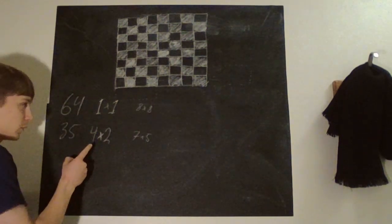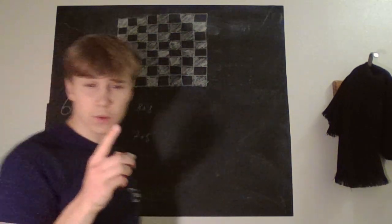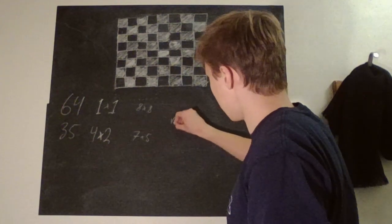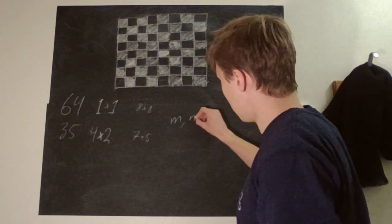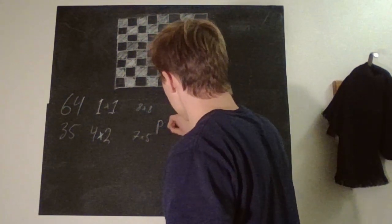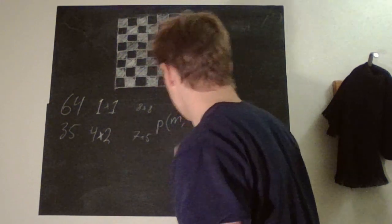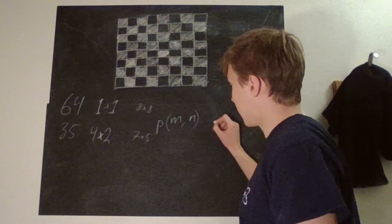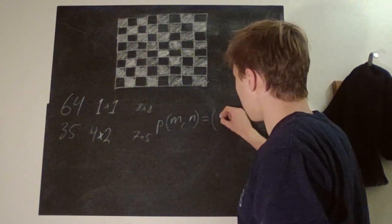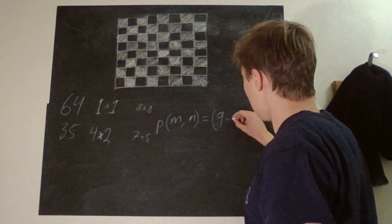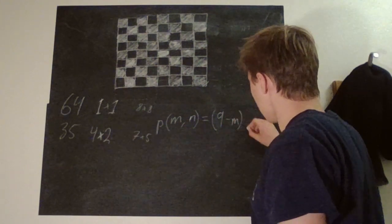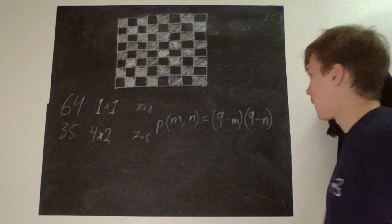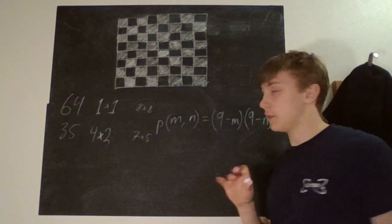And then we have a one one and a four two. Is it possible that a shape with size, say, M and N? Okay. We have all possible locations. Possible locations of a shape with size M and N is equal to nine minus M times nine minus N.